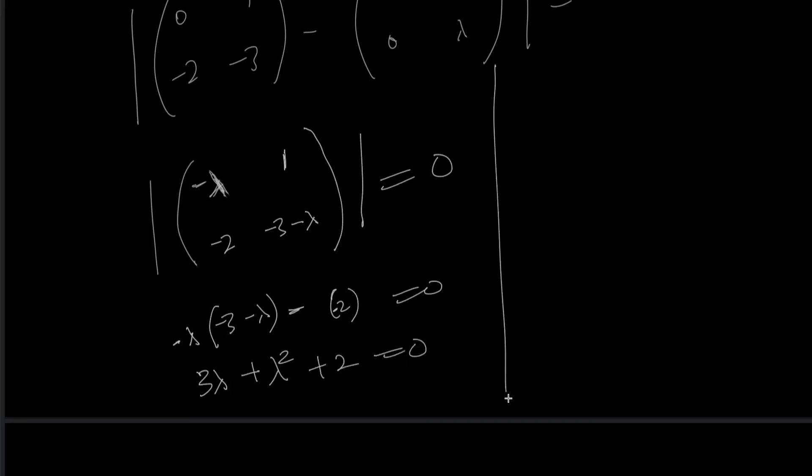This is -18λ plus λ² plus 2. Therefore, we're going to have λ² plus 3λ plus 2 equals zero.